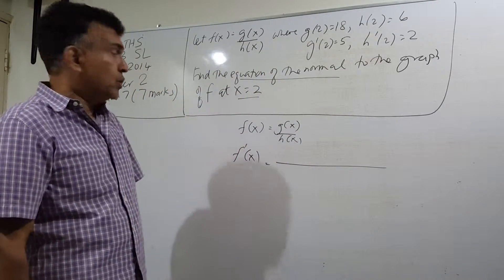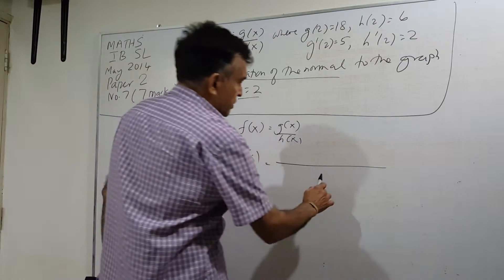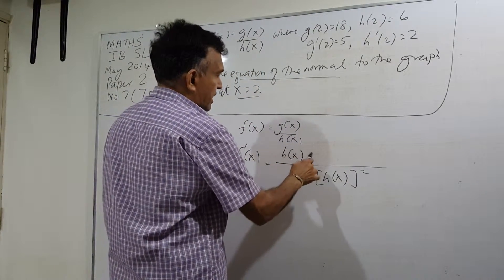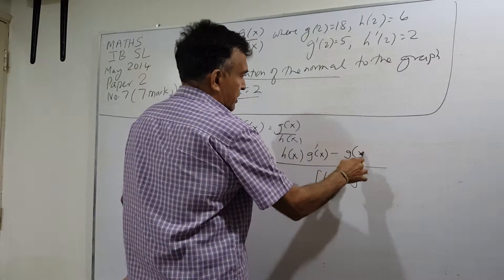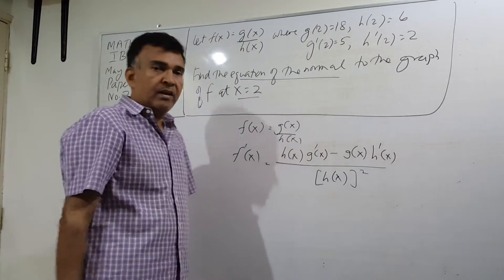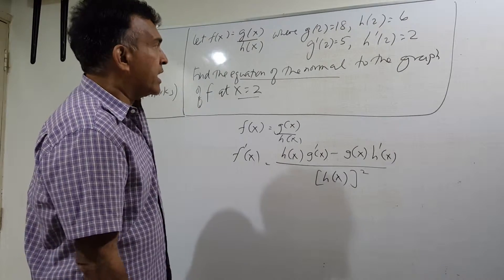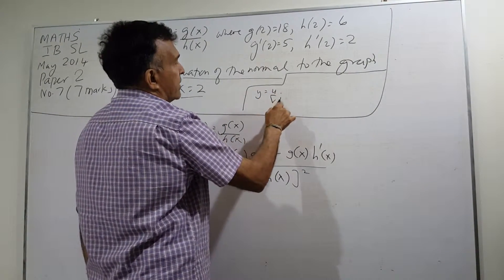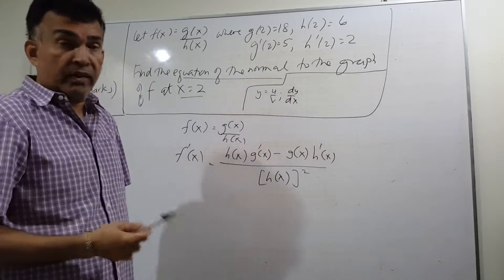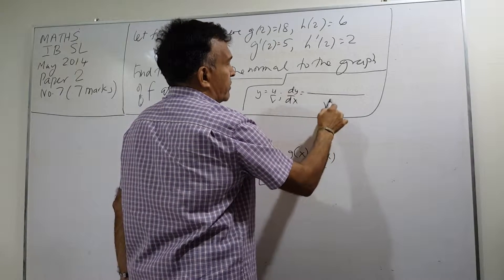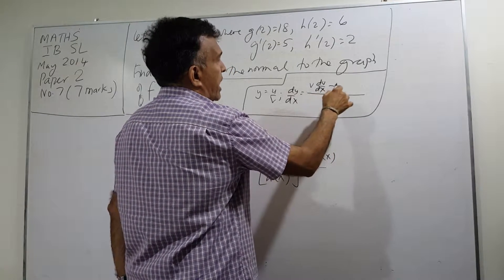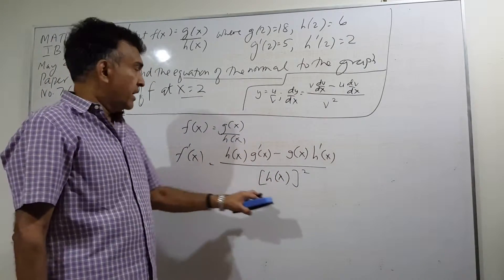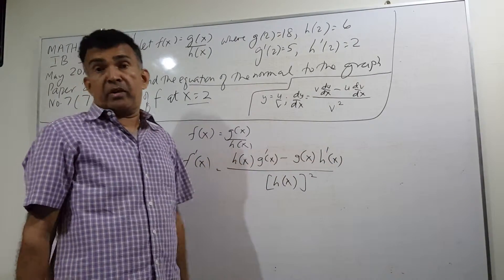We have used the quotient rule before. The quotient rule: if y equals u over v, then dy/dx equals v squared at the bottom, then v du/dx minus u dv/dx. So I have h(x) squared at the bottom, and then I have h(x) g prime x minus g(x) h prime x. Just using the quotient rule.